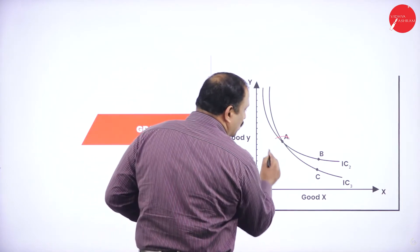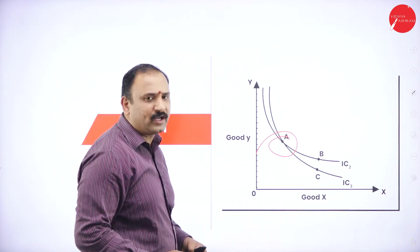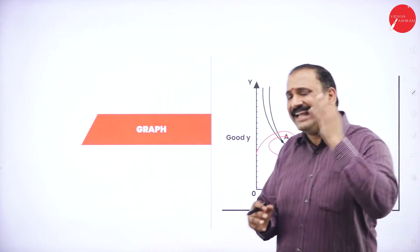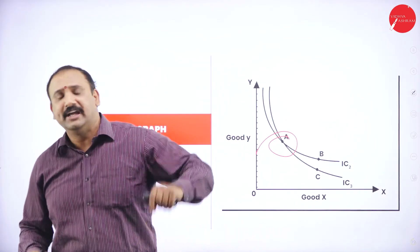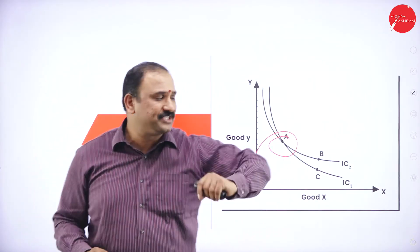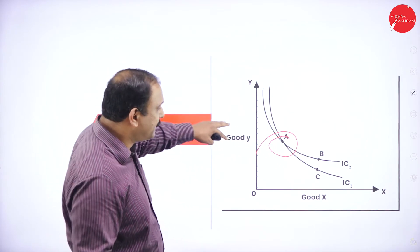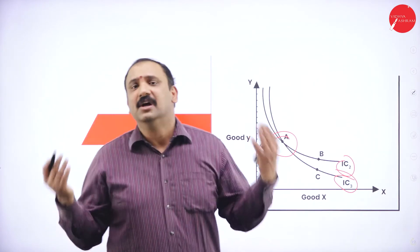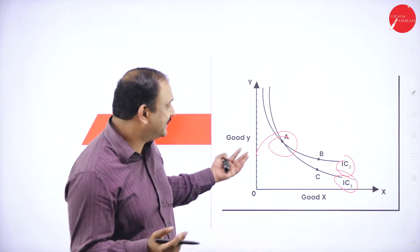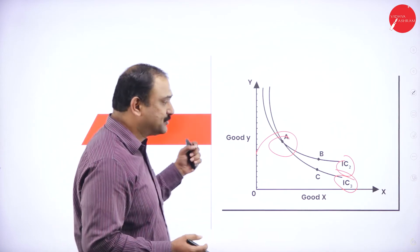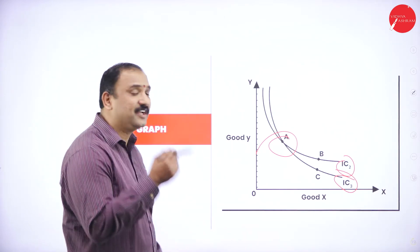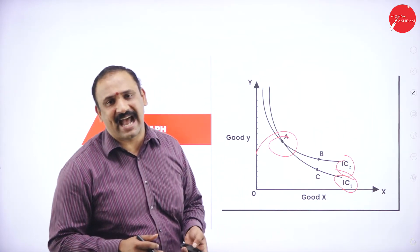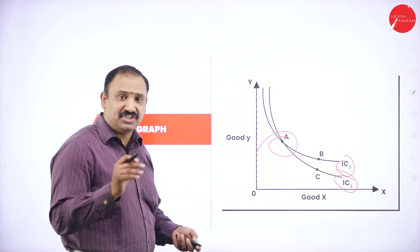Indifference curves cannot intersect each other. Good X and good Y will not have the same level of satisfaction, same level of priority in the minds of a consumer. That is why you will not be able to see an intersection happening. You will not be able to see that both of these curves are trying to intersect each other. That's not possible at all. This is very important. Why? Because you will not be able to see an intersection happening at any of the junctures here.